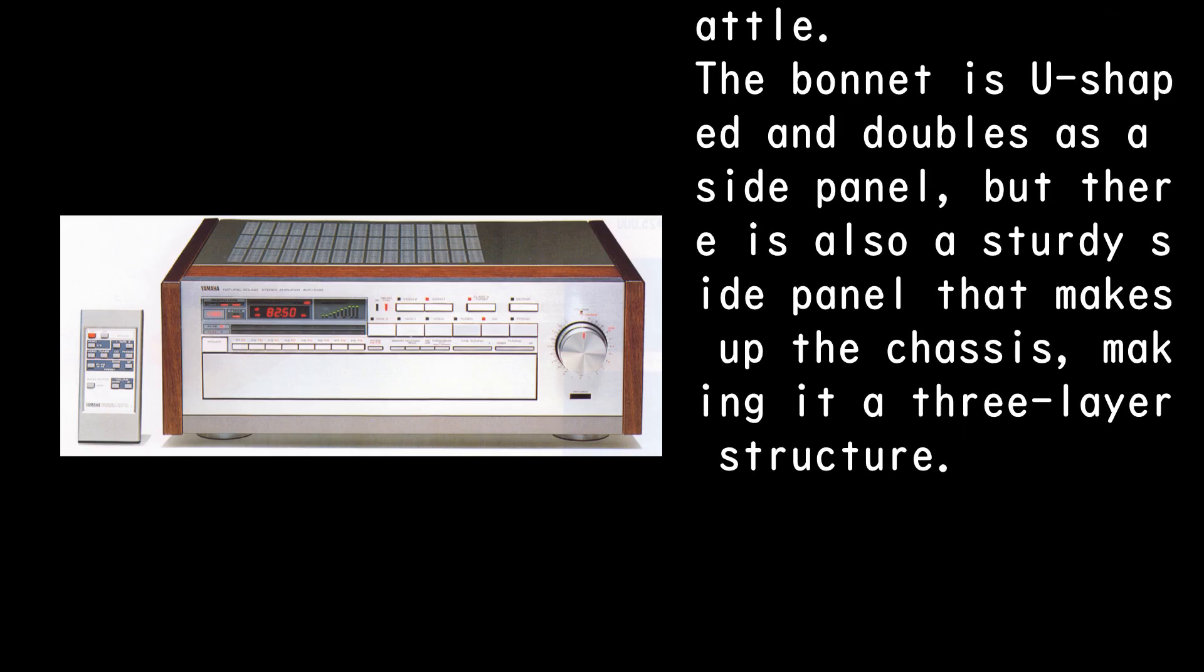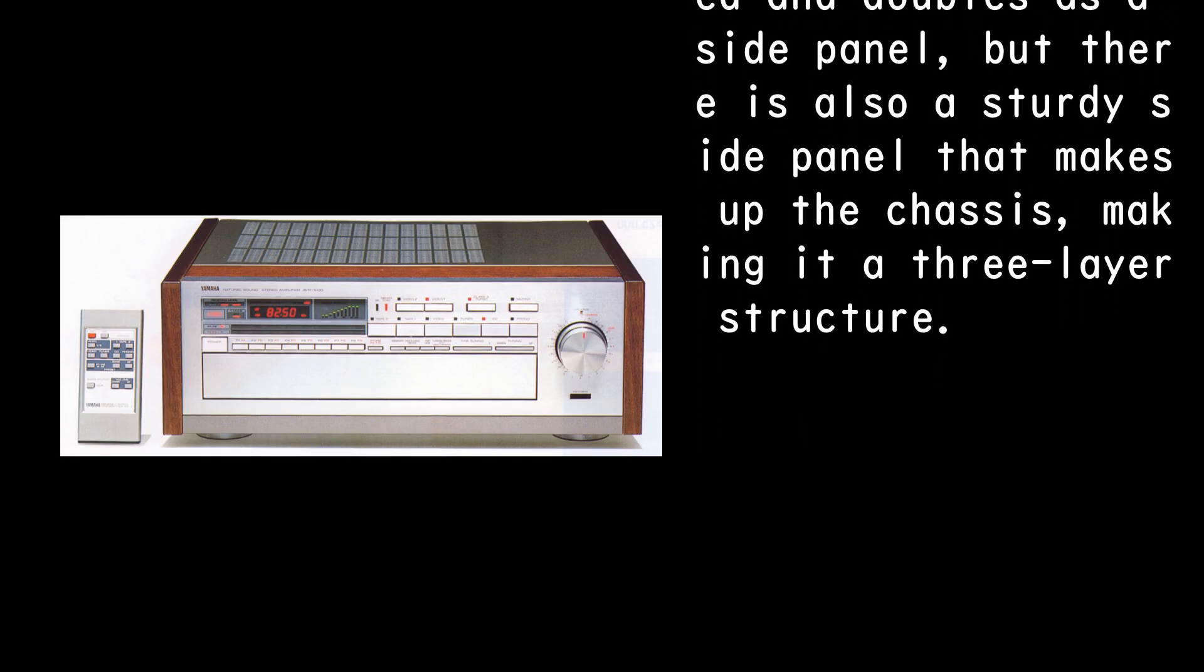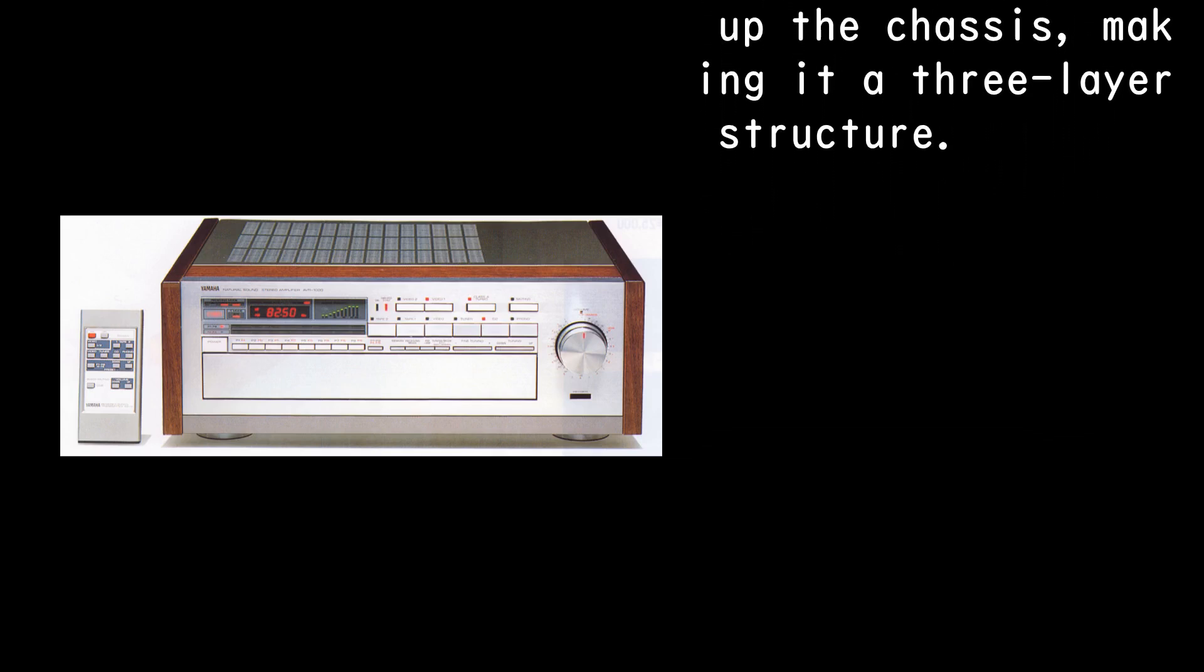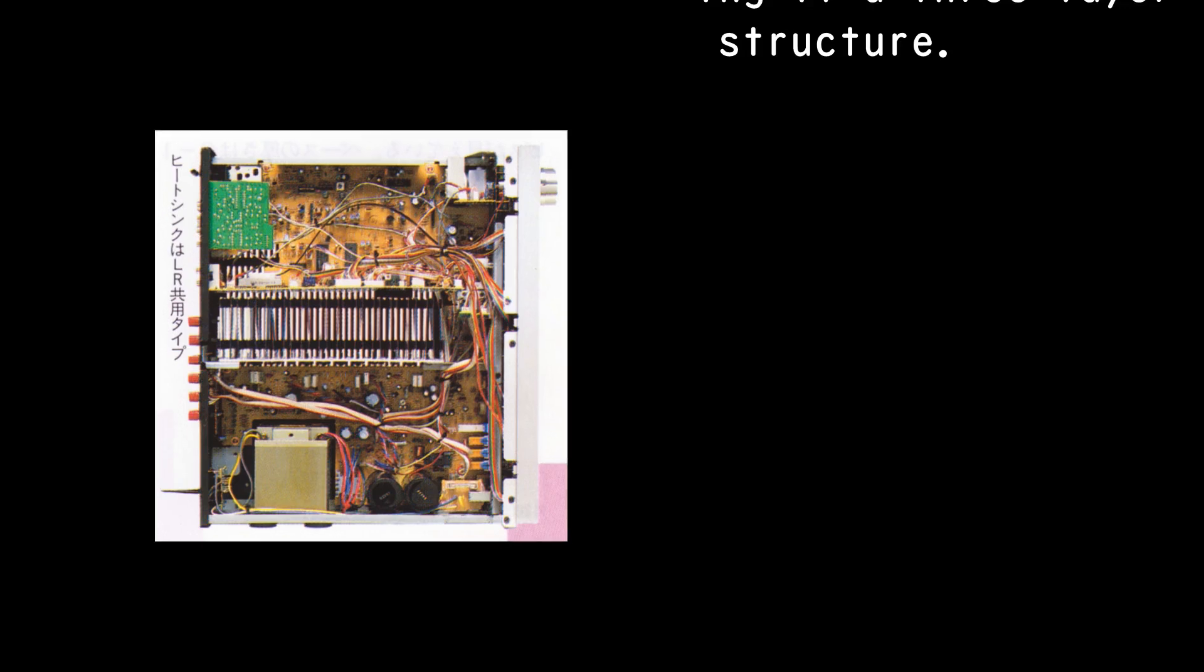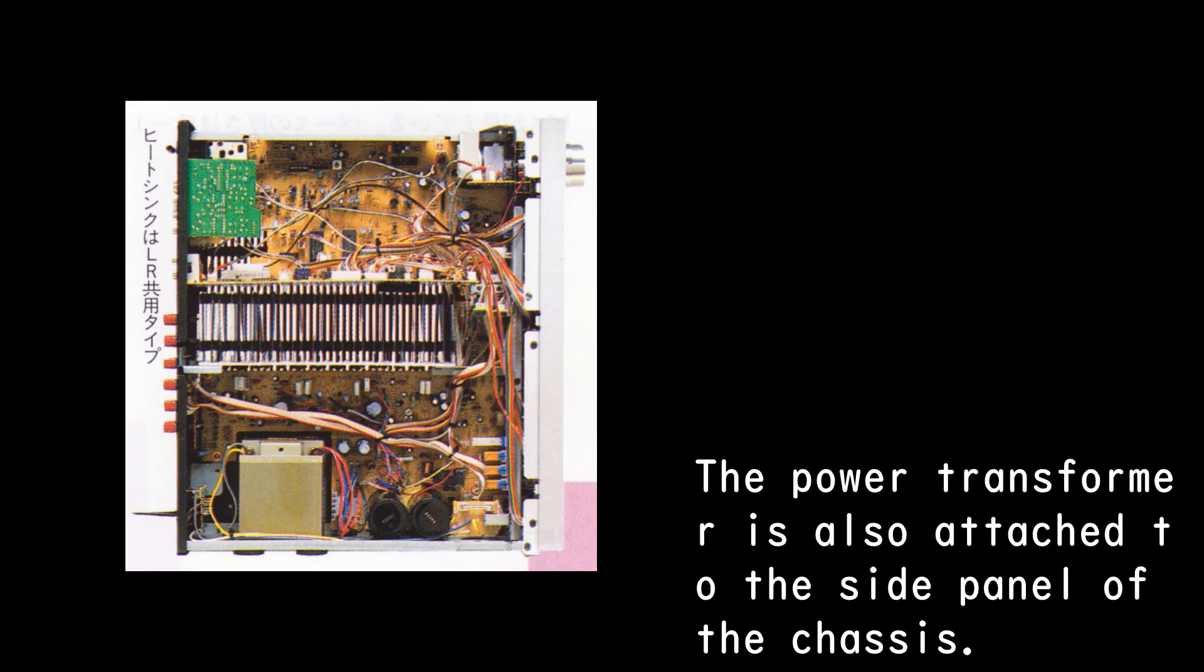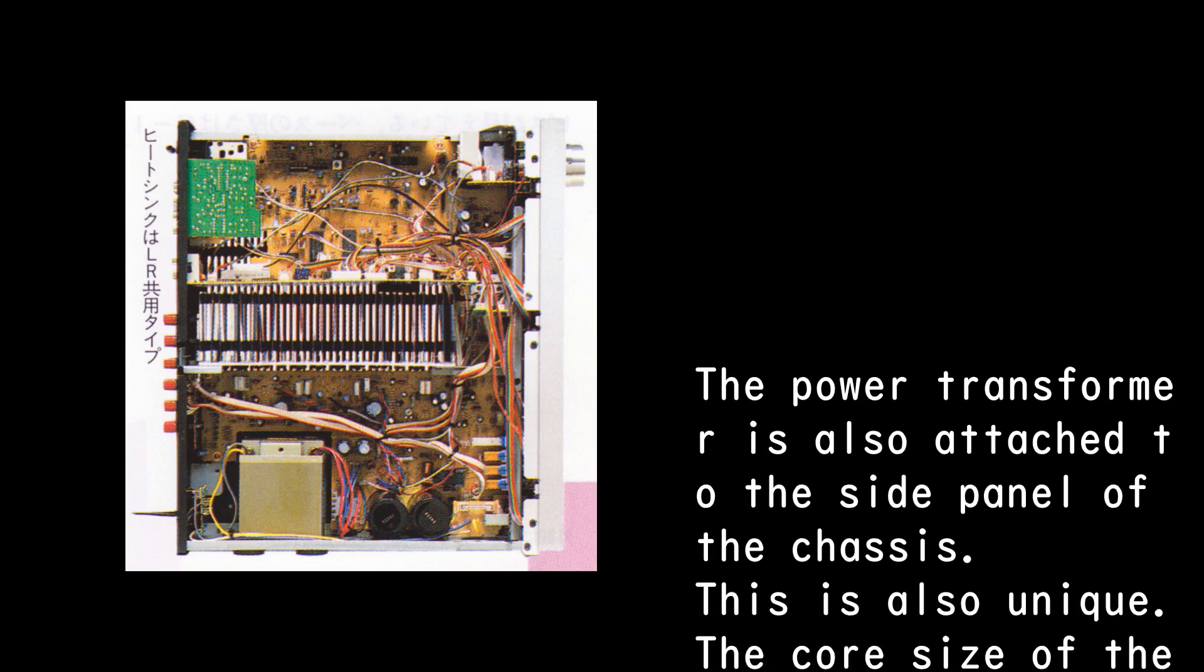The bonnet is U-shaped and doubles as a side panel, but there is also a sturdy side panel that makes up the chassis, making it a three-layer structure. The power transformer is also attached to the side panel of the chassis. This is also unique.